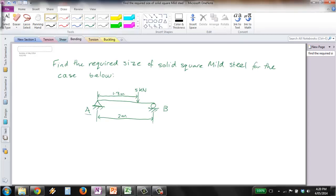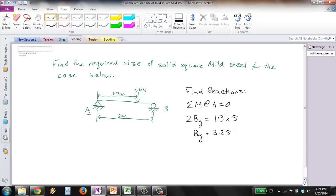The first thing to do here is find reactions. This should be pretty simple. We just take net moment at point A equal to zero. So we've got 2m times the reaction at B, which we'll call BY, and that will be equal to the moment produced by our 5kN force, which is 1.3 times 5. That gives us reaction BY equal to 3.25kN.